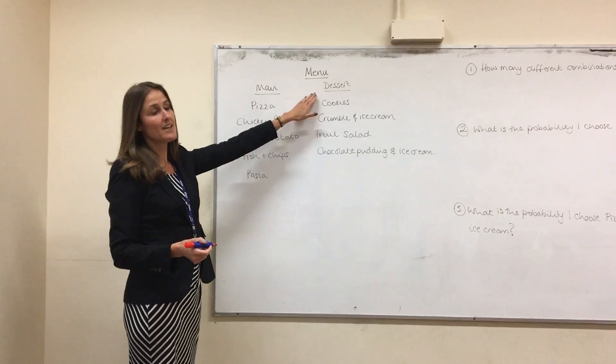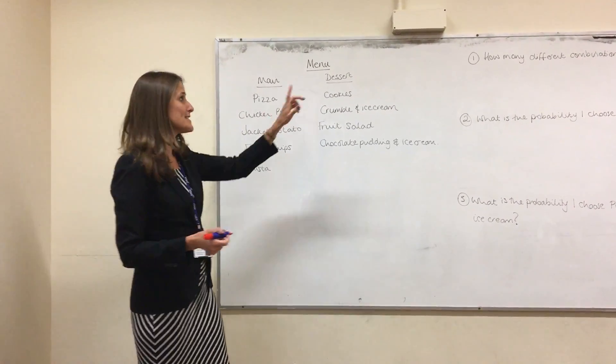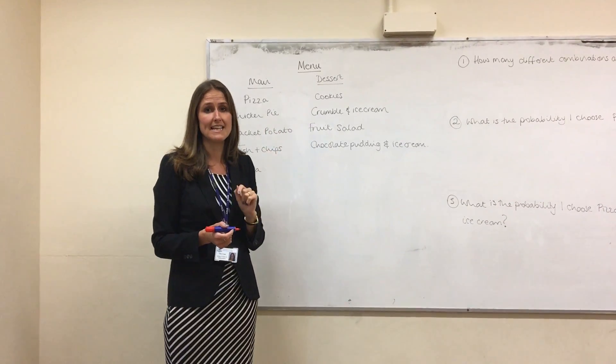I've got a menu with a main course menu with one, two, three, four, five different options, and a dessert menu with four different options in it.